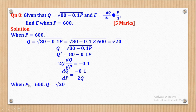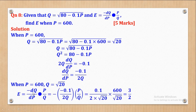When p = 600, q = √20. Now E was given as E = −(dq/dp) × (p/q). The negative sign is here; dq/dp = −0.1/(2q); and p/q is this. Substituting q = √20 and p = 600 throughout: E = −(−0.1 / (2√20)) × (600 / √20). Using the calculator to simplify this gives E = 3/2, and that was the value required.